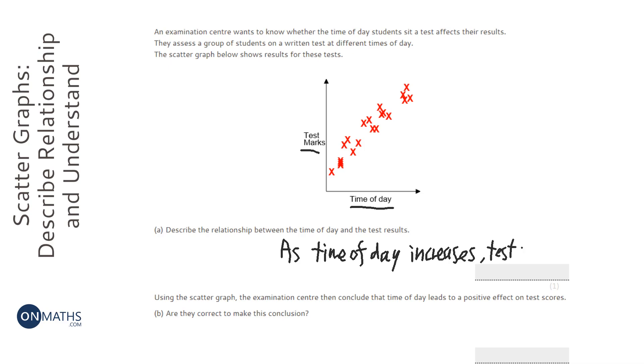...test marks increase. And because they're going up, it's a positive correlation. Test marks increase. So there's a difference between describing the type of correlation and describing the relationship.